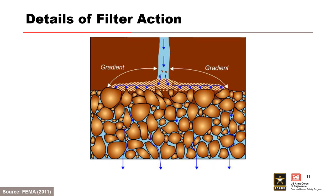The high gradients cause further widening of the filter cake until the gradient is ultimately reduced. The filter cake, having a very low permeability, covers the width of the crack and some distance on each side of the crack. The remaining filter is open for collecting seepage flow through the pores of the soil between cracks.